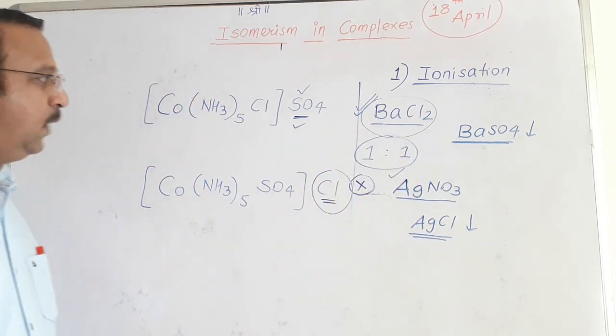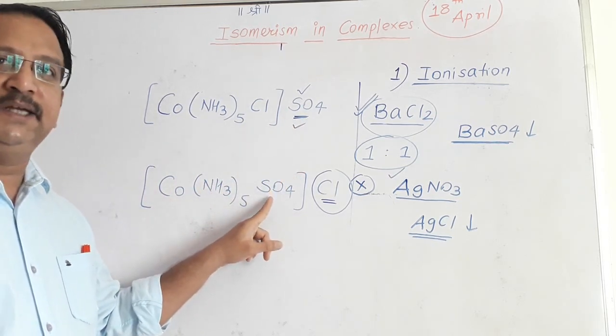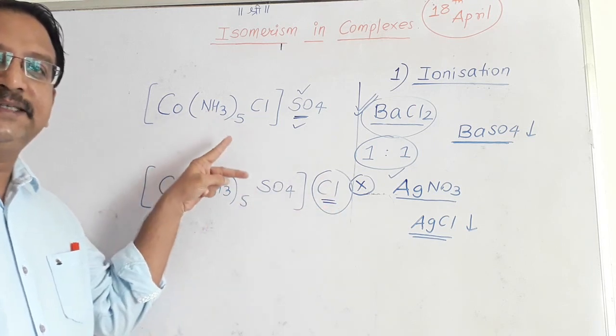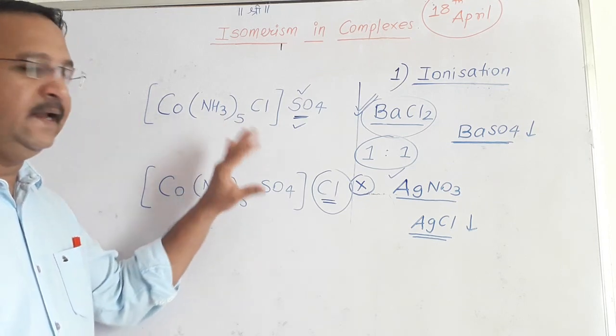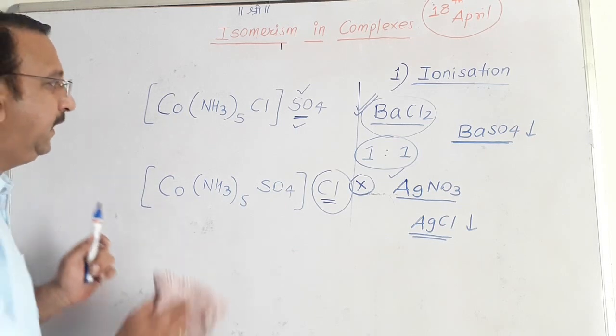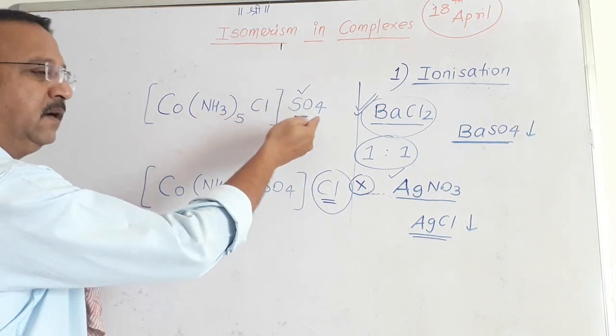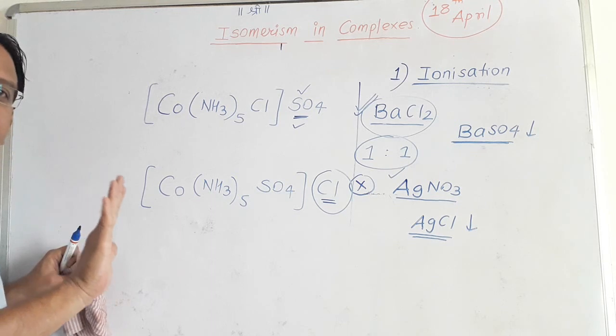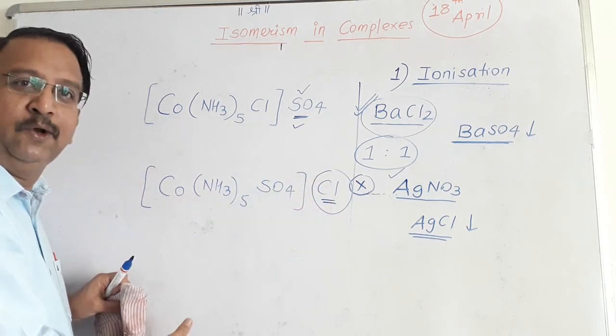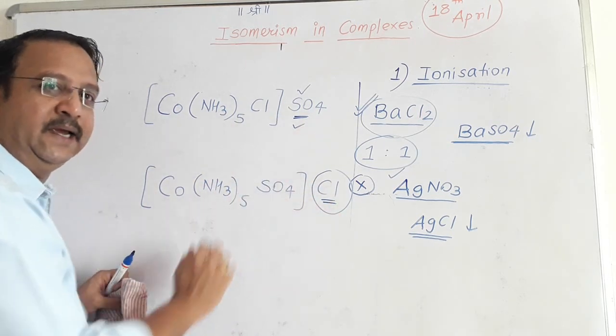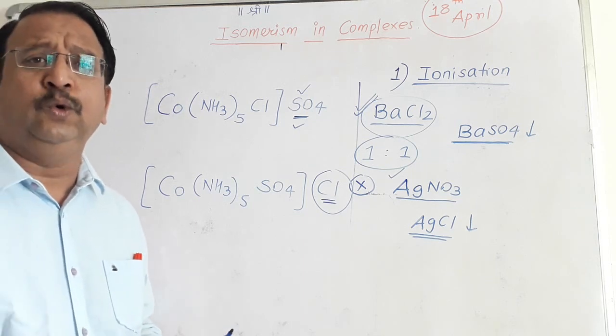So chloride ion can be tested by AgNO3 and sulfate ion can be tested by BaCl2, both in one-to-one proportion. Ionization isomerism: the simple definition is when counter ion acts as potential ligand and ligand can act as counter ion, the complexes or isomers obtained are called ionization isomers. One very important thing: anionic ligand can act as counter ion. You have to have a better understanding. Neutral molecules never go out. Now we have some questions.